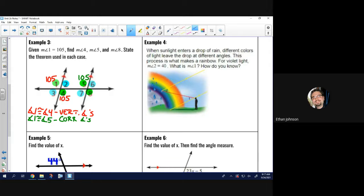Then it says measure of angle 8 also in green. So, that's 105. So, I know angle 1 is congruent to angle 8 because of alternate exterior angles. They're both on the outside of our parallel lines, opposite sides of that transversal.